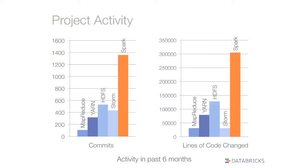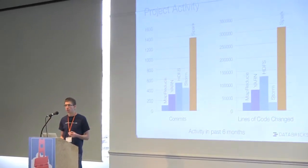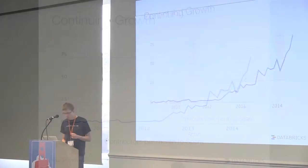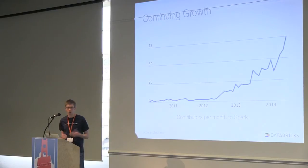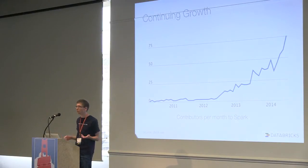This graph shows some of the activity in the project. In the past year especially, we've had very fast growth in the community. We're the most active open source project in the big data space. This shows commits per month — a commit in Spark is an entire patch, not just a git commit — and lines of code changed in the past six months. In the past few months, we've had over 50 people contribute to the project each month.